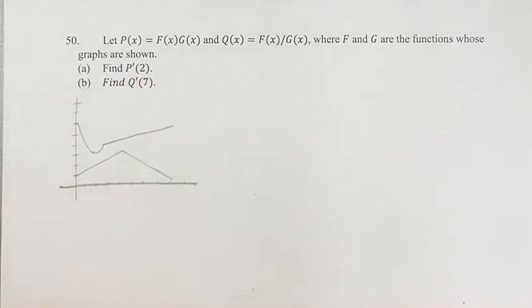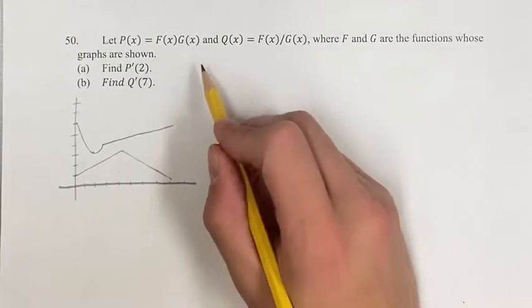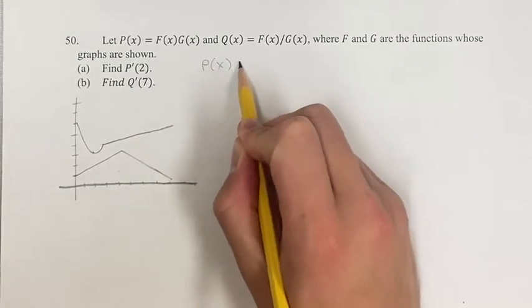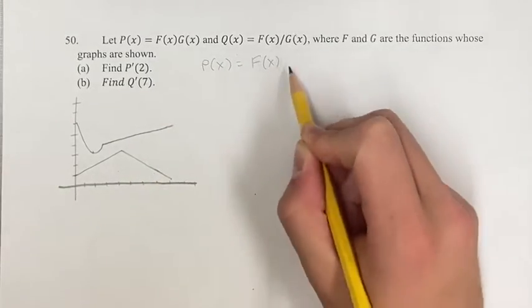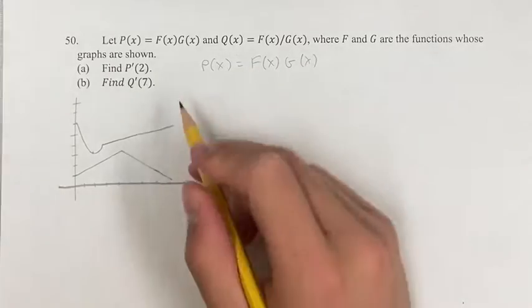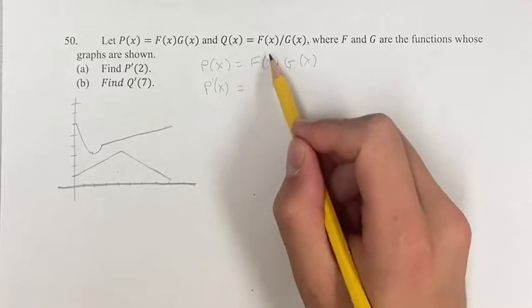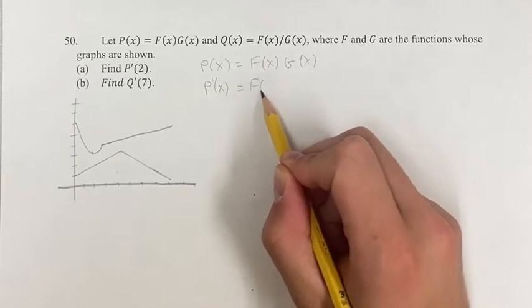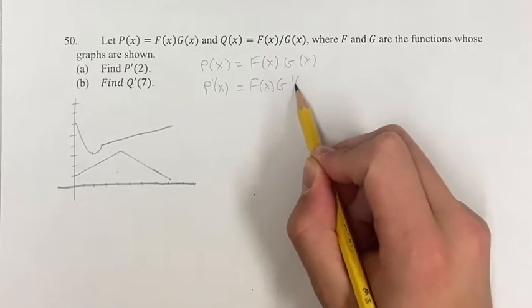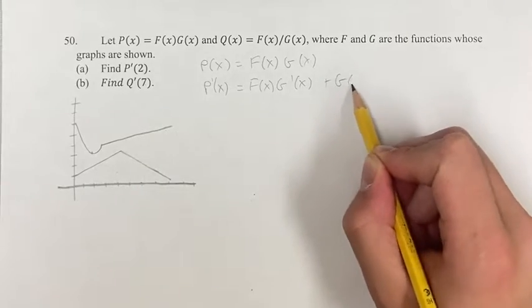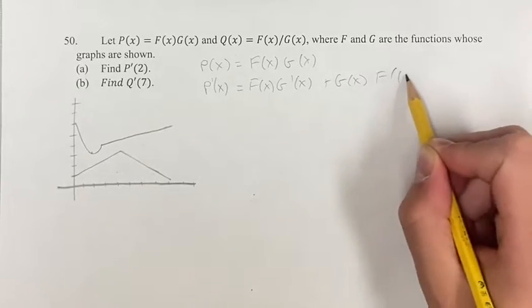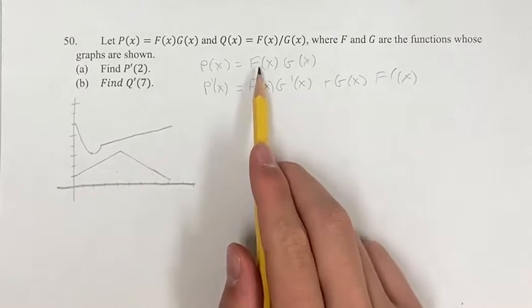So firstly, when we're finding the derivative of P at 2, let's just find the general form first. P(x) equals F(x) times G(x). Therefore, the derivative is equal to F times the derivative of G plus G times the derivative of F. And this is the product rule.